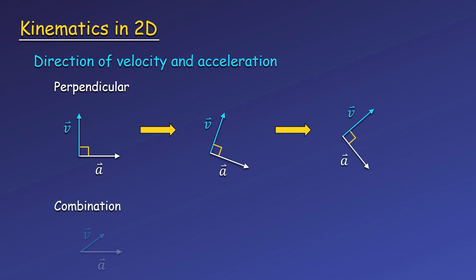We can also have acceleration that has a parallel component and a perpendicular component to the velocity. This means the velocity will change direction due to the perpendicular component of acceleration, and the speed or size of the arrow will also change, but this will be due to the parallel component of acceleration.